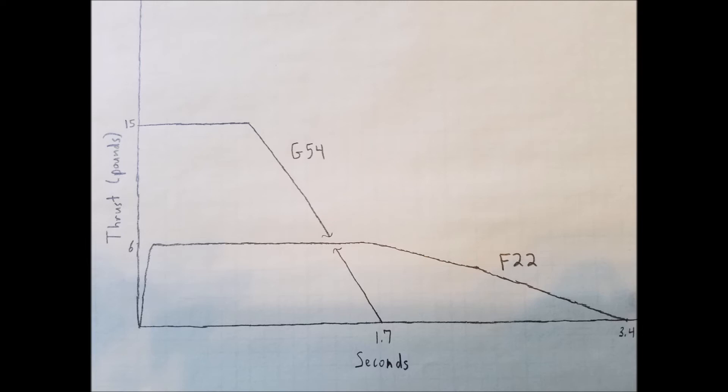And the next thing to look at is the thrust. You can see that the G54 has almost three times the maximum thrust as the F-22. And that's the reason that the rocket with the G54 in it jumped off the pad so much quicker than the rocket with the F-22 in it.